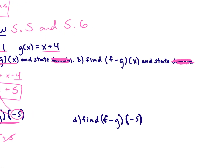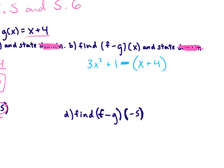Next, let's look at part b — we want to find f minus g. We start with function f, which is 3x squared plus 1, and we subtract the entire function g. Make sure you put it in parentheses: minus (x plus 4). Distribute that minus sign to everything, giving 3x squared plus 1 minus x minus 4. Combining like terms in standard form: 3x squared minus x minus 3.